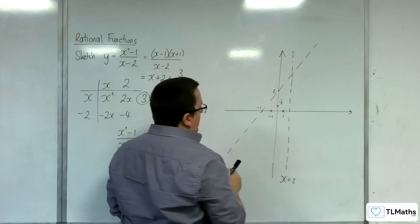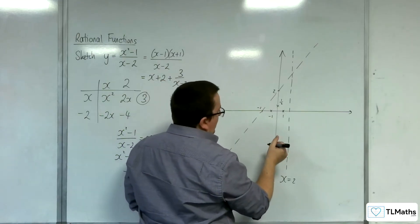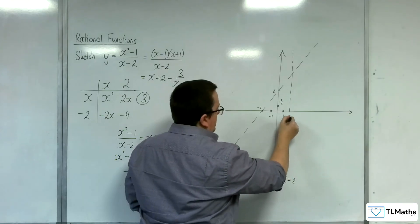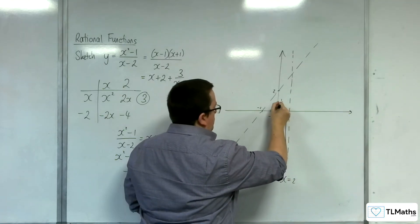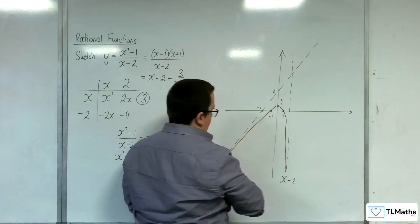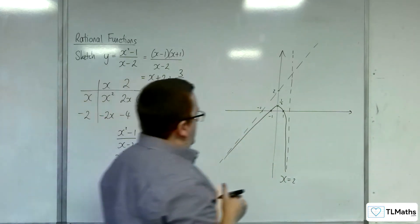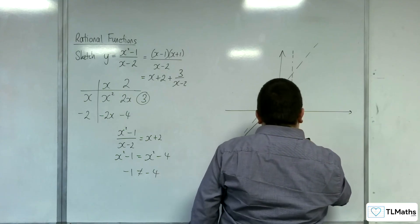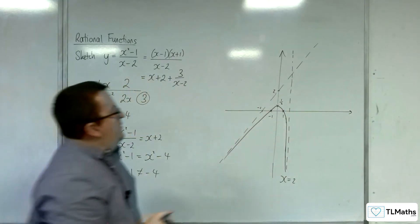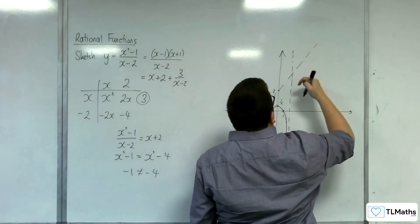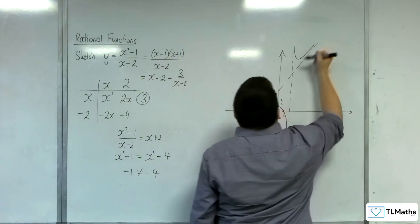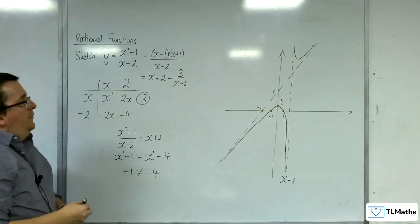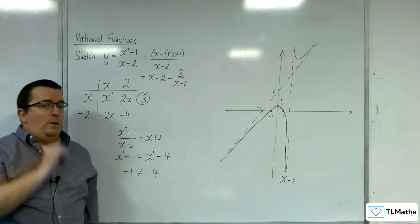So we know that it won't cross that oblique asymptote. So it must be coming down, up from here, sorry, up from here, through 1, through half, through minus 1, and then tend towards that oblique asymptote. That wasn't a particularly good shape there. Something like that. Then for the top part, in order to tend towards those two asymptotes, you must do something like that. And so that is the shape of the curve y equals x squared take away 1 over x take away 2.